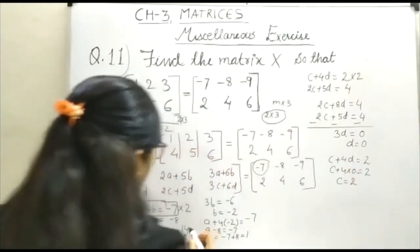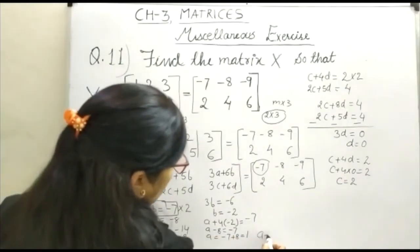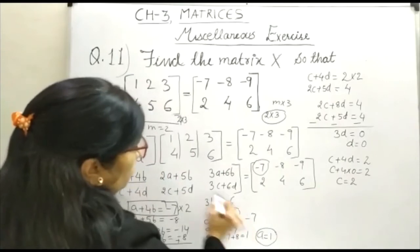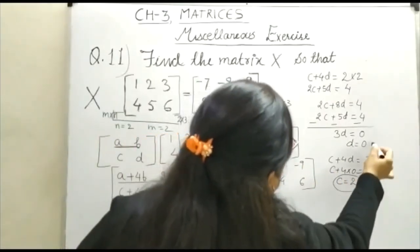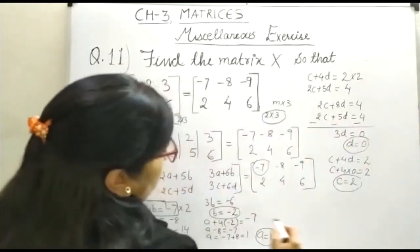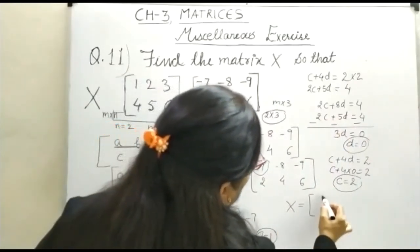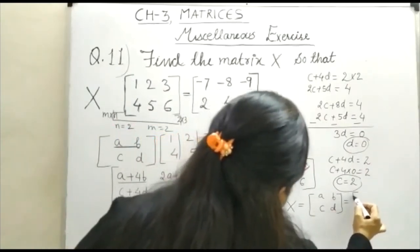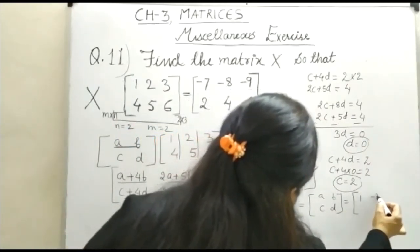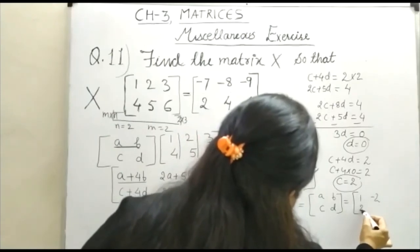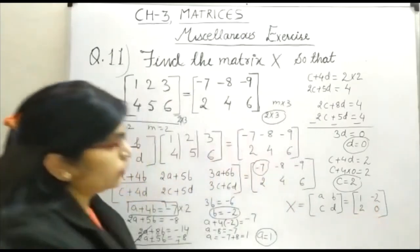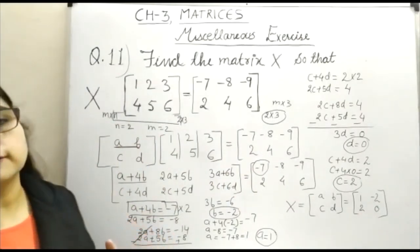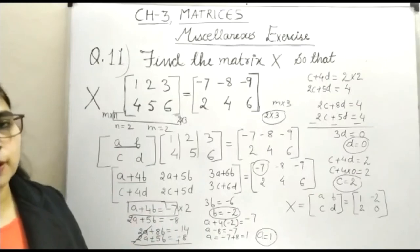Finally, we have got the value of here it is A is equal to 1, B is equal to minus 2, C is equal to 2 and D is equal to 0. Therefore, X is equal to A, B, C, D and you can keep these values here. And this is how if any matrix is given and its order and its entries can be worked out. Thank you.